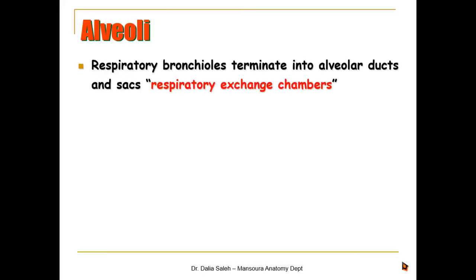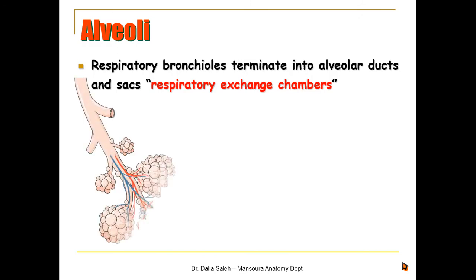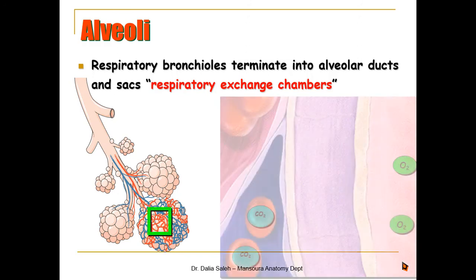The respiratory bronchioles terminate into alveolar ducts and sacs, which are the respiratory exchange chambers. The walls of these respiratory exchange chambers are rich in blood supply, allowing efficient gas exchange.